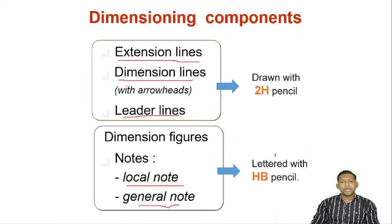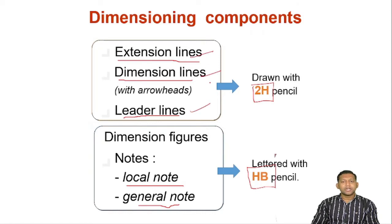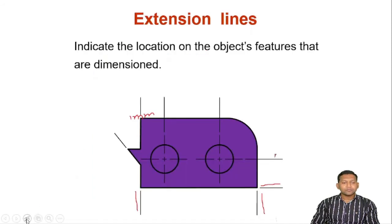These are the different types of lines used. One is a 2H pencil and another is an HB pencil — HB pencil is used for general outlines. In dimensioning, the different types of lines we see are: extension lines, dimension lines, and leader lines. These are the three different types of lines we encounter whenever we give dimensioning for a particular object.